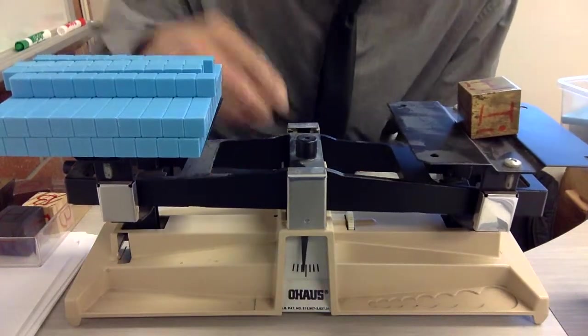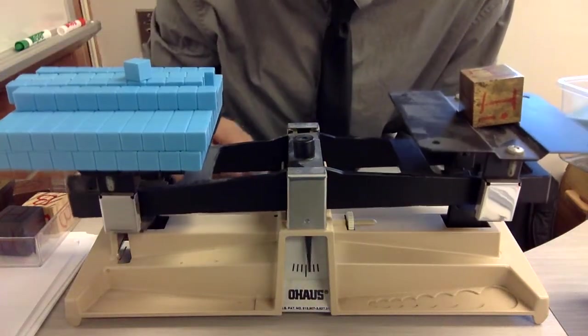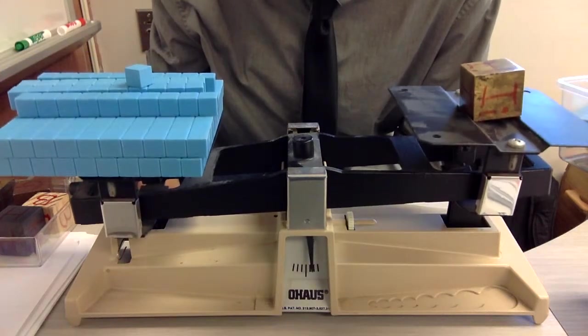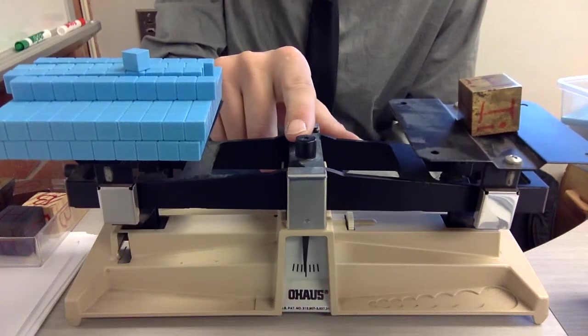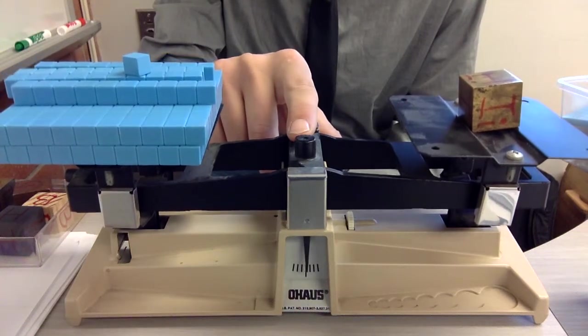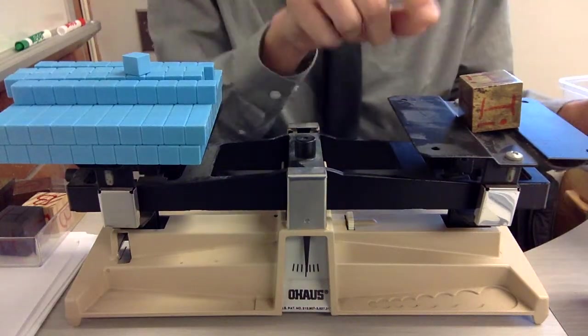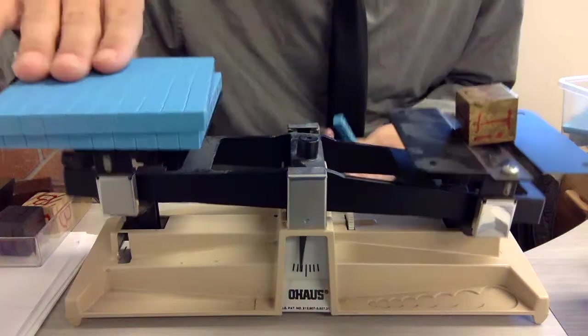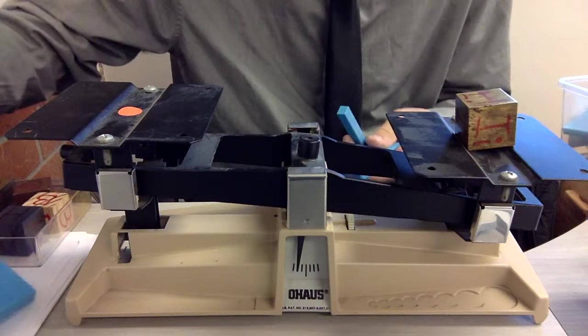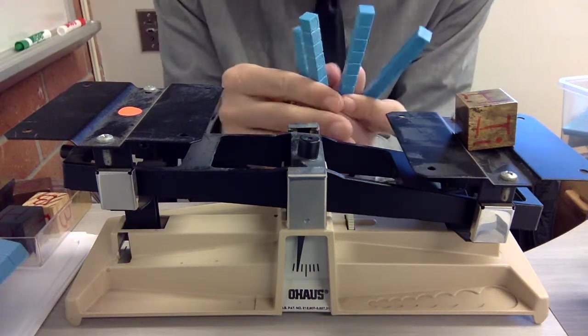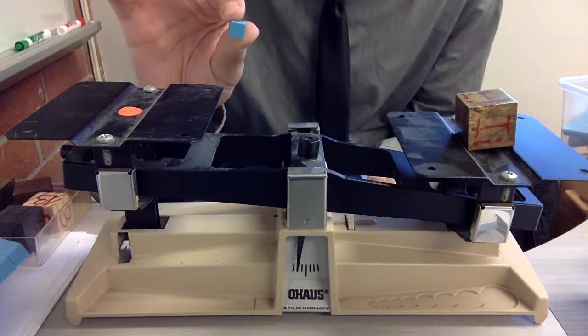Now we're going to add some ones. This is the ones block. Put that on. There you go. As you see, the needle is swinging about equidistant on both sides. Once it settles, it will settle at the equilibrium. Now I know that the I block weighs two 100 blocks, so 200, four ten sticks, 240, and one ones block, 241.